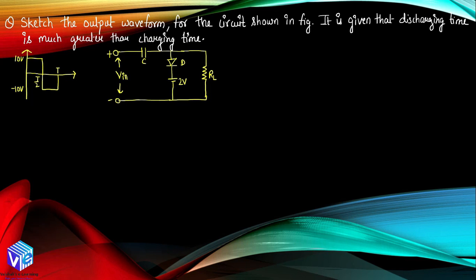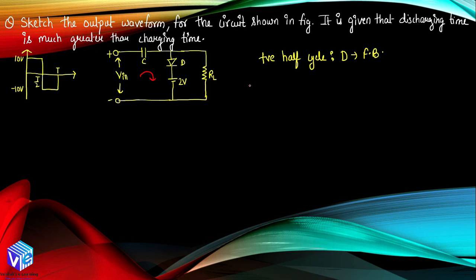The next question: sketch the output waveform for a circuit with a square waveform input, a capacitor, a diode, and a battery, given that the discharging time is much greater than the charging time period. During the positive half cycle, the diode is forward biased and replaced by a short circuit. Applying KVL: +10 − V_C − 2 = 0, so V_C equals 8 volt. The capacitor charges up to 8 volt.